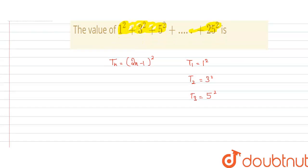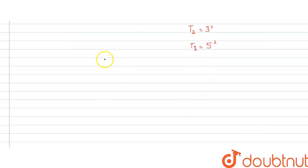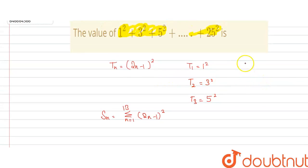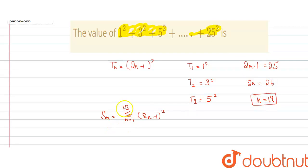Since we have to find the sum of this series, Sn will be the sum from n = 1 to 13 of (2n − 1)². The last term is 25, so 2n − 1 = 25, which gives 2n = 26, so n = 13. Therefore, we sum from n = 1 to 13, as there are 13 total terms.